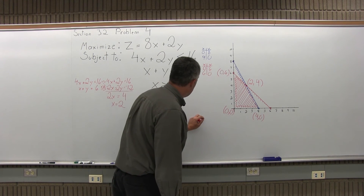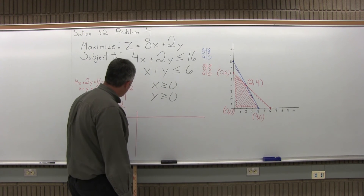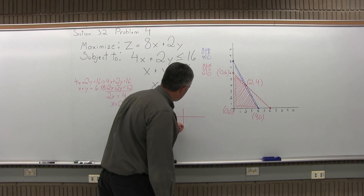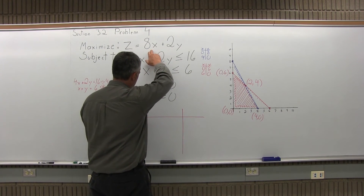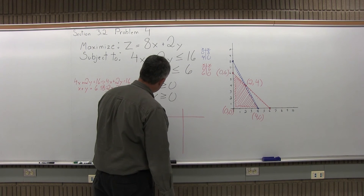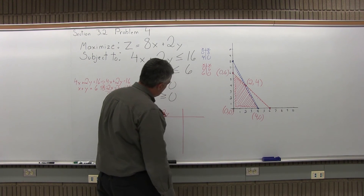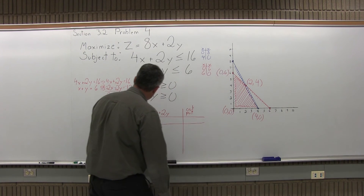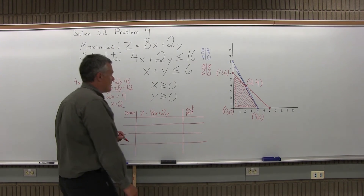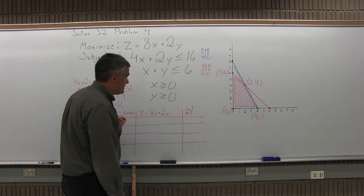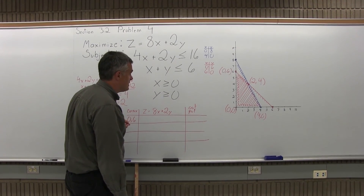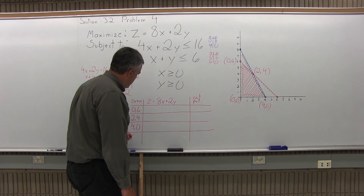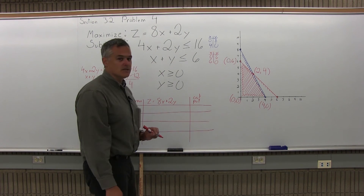The first column of the chart lists the corner points. The middle column — a little wider — lists the objective function, which for this problem is z equals 8x plus 2y. The last column is output. I'll list all the corner points: (0, 6), (2, 4), (4, 0), and (0, 0). I know (0, 0) can't be the maximum, but I'll include it.